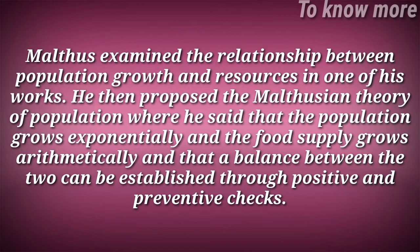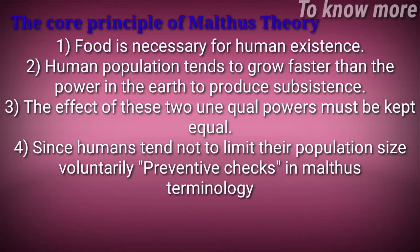He said that population grows exponentially and food supply grows arithmetically, and that the balance between the two can be established through positive and preventive checks. The core principle is: food is necessary for human existence, and human population tends to grow faster than the earth's power to produce subsistence. These two unequal powers must be kept equal.